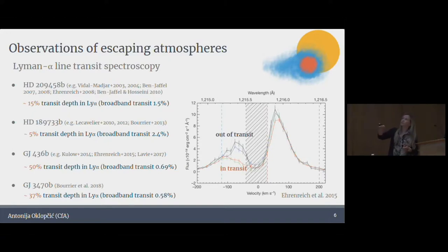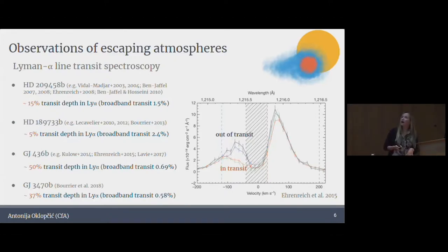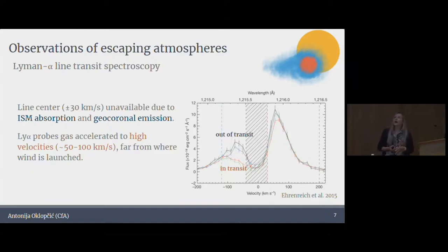We lose a lot of information in the central part of Lyman alpha due to ISM absorption. This is the Lyman alpha flux of GJ 436 from Ehrenreich et al. 2015. In black it's out of transit, and in red it's in transit. Even just by eye, we see this enormous drop in flux due to this highly extended cloud of hydrogen surrounding GJ 436b. These observations were first evidence that hydrogen envelopes can extend very, very far out from the planet.